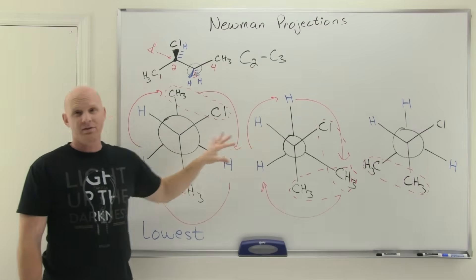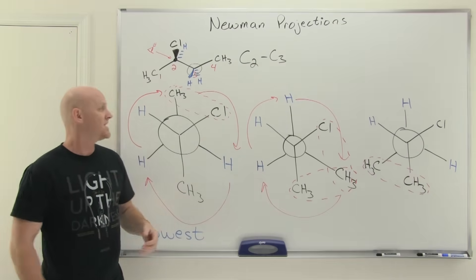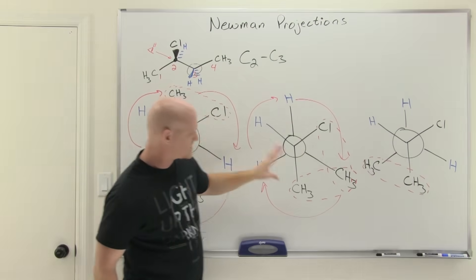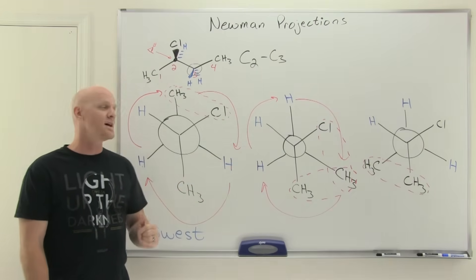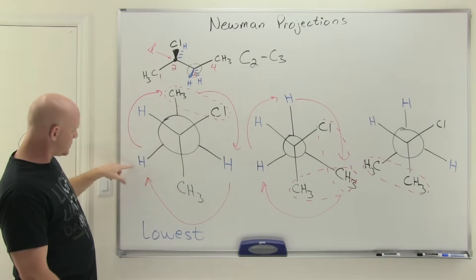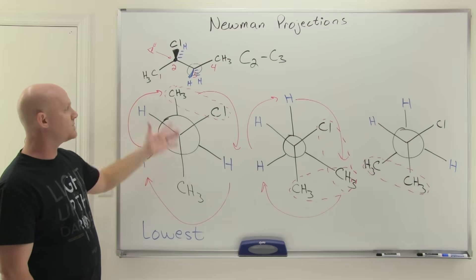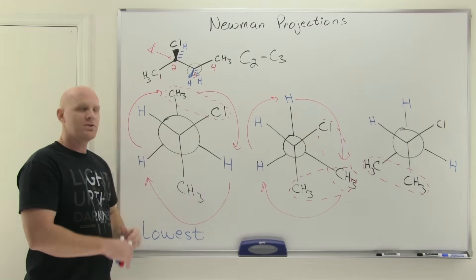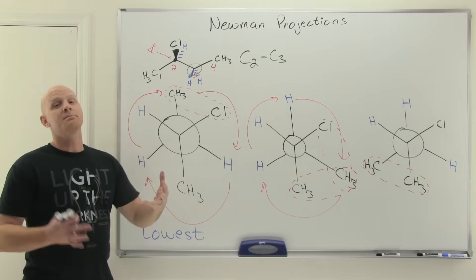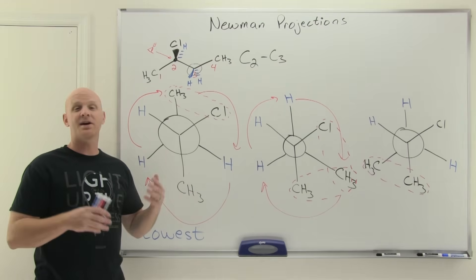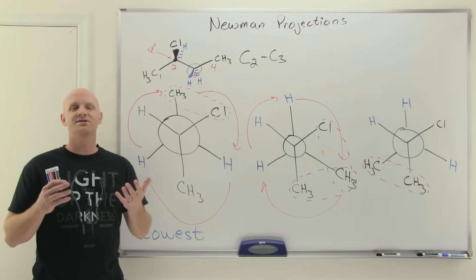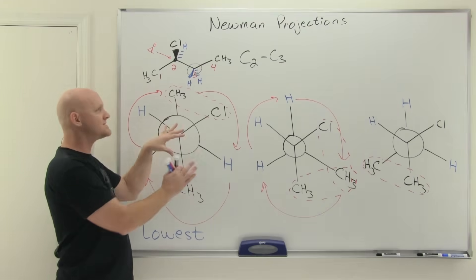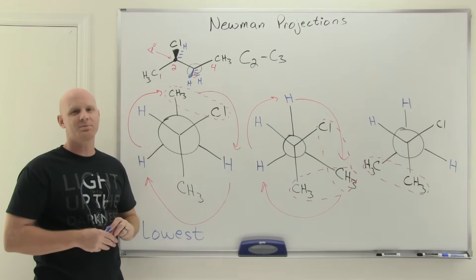I drew all three so we could compare them. But if you were doing this on a test, you might be able to draw the first one and realize that rotating the back carbon around would give two gauche interactions, and rotating it further would place the methyl group in a gauche between bigger groups — so you might not even have to draw all three. However, early on, maybe you do need to draw all your staggered conformations before deciding which one is the lowest energy. If you got something out of this lesson, consider giving me a like and a share — pretty much the best thing you can do to support the channel. And if you're looking for practice problems on Newman projections or the study guides that go with this lesson, check out my premium course on chadsprep.com.